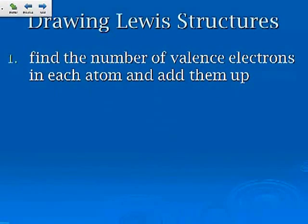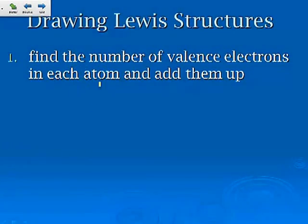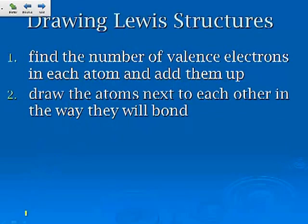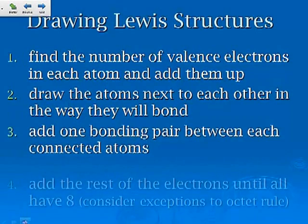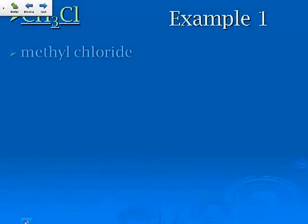If we draw Lewis dot structures, there's a few steps. First is finding the number of valence electrons in each atom and adding them up. Then you draw the atoms next to each other in the way that they would bond. You add one bonding pair between each connected. You add the rest until they all have eight, considering some exceptions. Now, the rules don't make a ton of sense unless you see some samples.